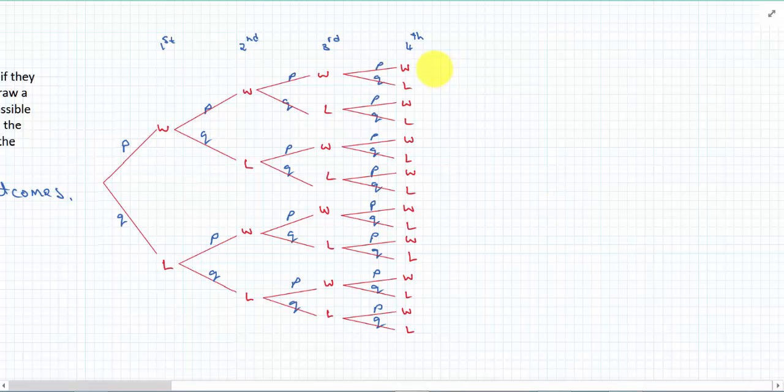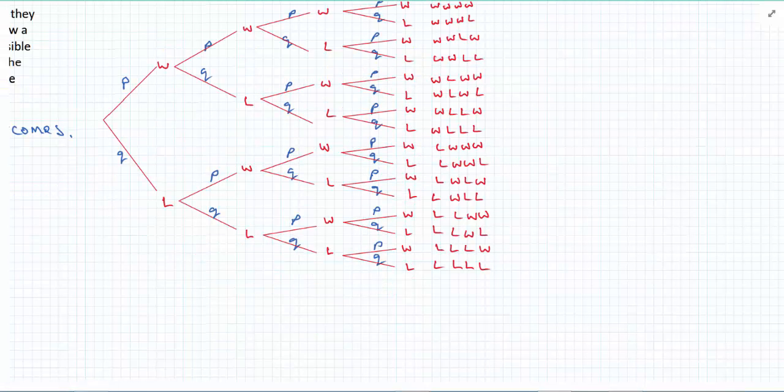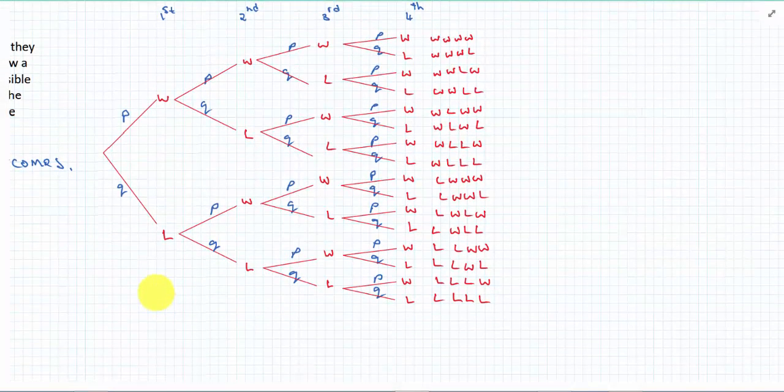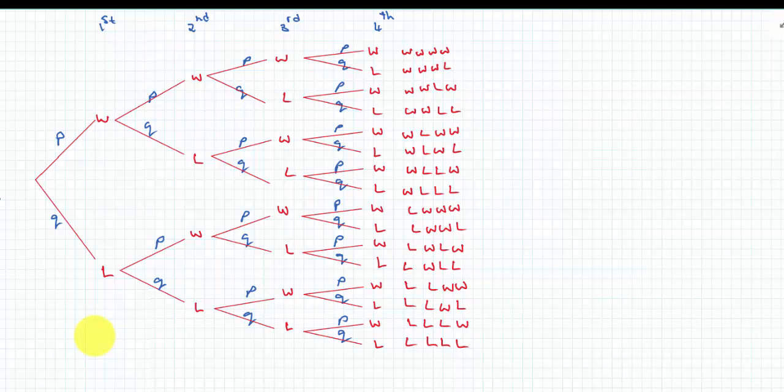Binomial applies for situations where the probability doesn't change from stage to stage of the event. So looking at all possible outcomes, the first is all wins. The next one is three wins and a loss. The next one is another three wins and a loss but the loss is in a different spot.